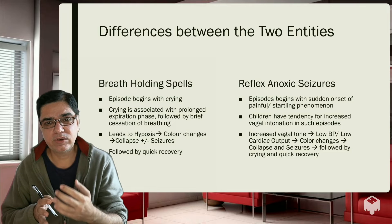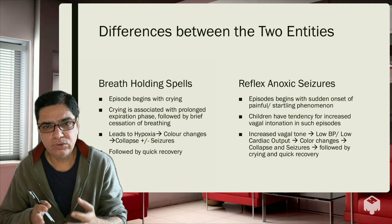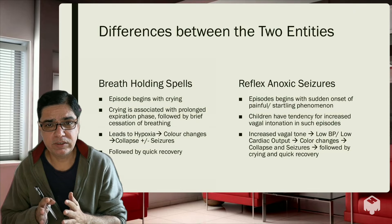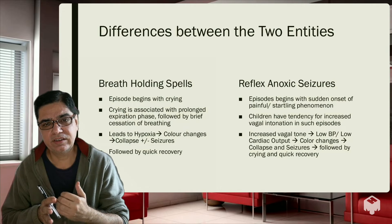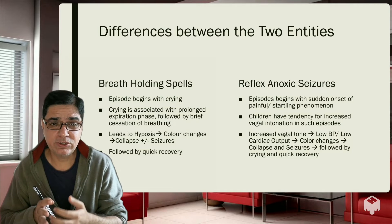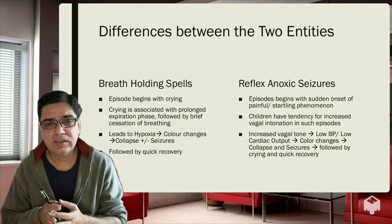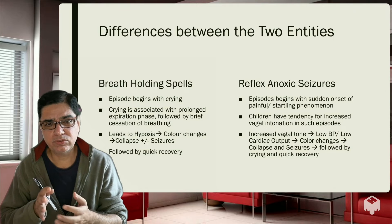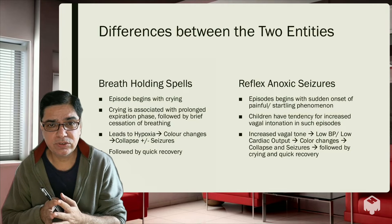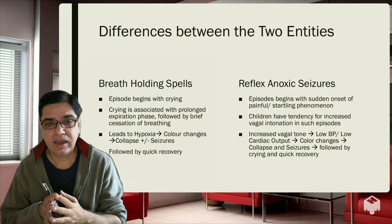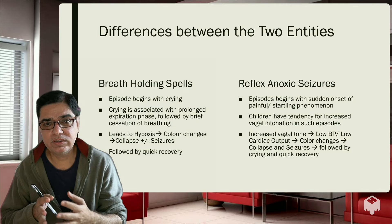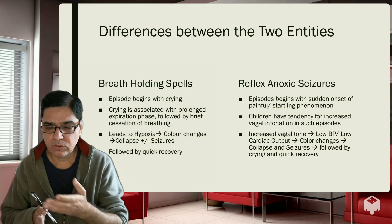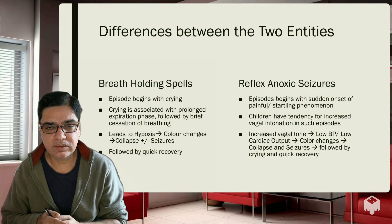If you are confident this is a breath holding spell or reflex anoxic seizure, you don't need to do anything further. In the next section, I will show you two videos. The first is of a baby having a breath holding spell — you will see the child start crying, show a prolonged expiration phase, stop breathing, have brief jerky movements, and then recover. The second video shows a child with reflex anoxic seizure — they become very pale and gray, start seizing, and then end up crying. After the videos, we will discuss investigations and treatment.